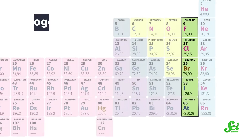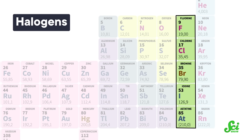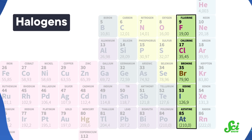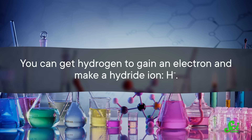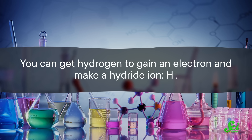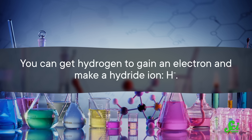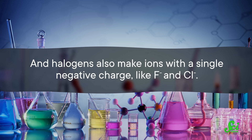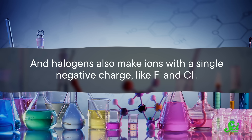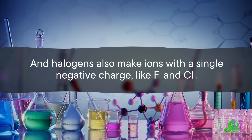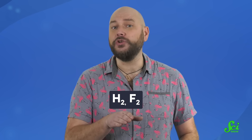Speaking of chlorine, let's skip ahead to the halogens — fluorine, chlorine, on down — because hydrogen also forms similar ions to the halogens. You can get hydrogen to gain an electron and make a hydride ion, H-minus. And halogens also make ions with a single negative charge, like F-minus and Cl-minus. Hydrogen, fluorine, and chlorine also all make gases at room temperature and all exist in diatomic form — H₂, F₂.